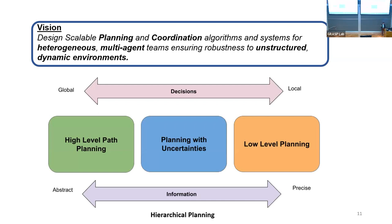The approach I'm taking is to look at the problem from a hierarchical planning perspective. We have higher-level global path planning methods, then planning with uncertainties that we have to take into account, and then lower-level planning which might also include some control — moving from abstract representations like graph representations of paths to more precise representations which can be actions or control signals.